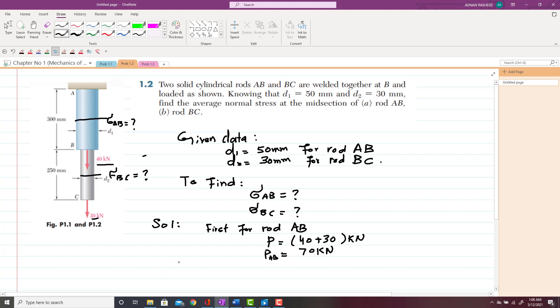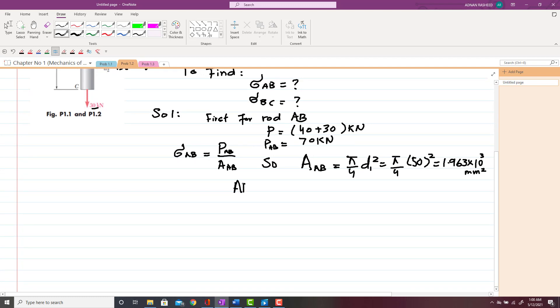So now we have to find sigma_AB, which is equal to P_AB over area of AB. First, we have to find area of AB, which is equal to π/4 × D1². If you put the value of D1, that is π/4 × (50 mm)², that will give you 1.963 × 10³ mm². So area of this rod AB will be 1.963 × 10³ mm².